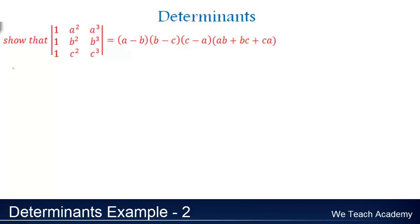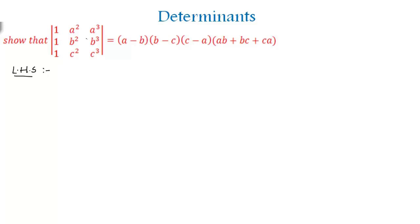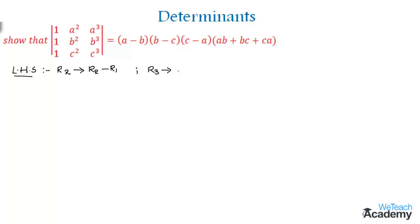First, let us consider the LHS side. To evaluate the determinant value we need to perform certain row operations. We will apply R2 minus R1 to the second row, and similarly R3 minus R1 to the third row.